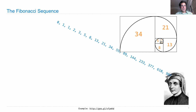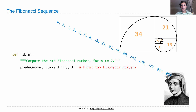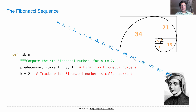So let's write a function that returns the nth Fibonacci number. We'll call it fib. We'll compute the nth Fibonacci number for n greater than or equal to 2, and we'll do so by binding the names predecessor and current to 0 and 1, the first two Fibonacci numbers. And then we'll track another name, k, and k will tell us which Fibonacci number in the sequence is currently bound to the name current.